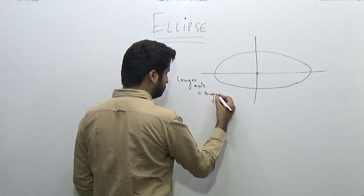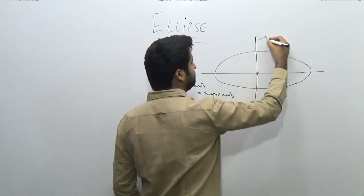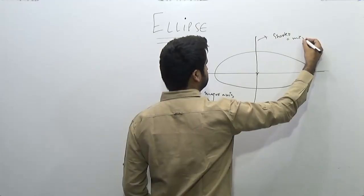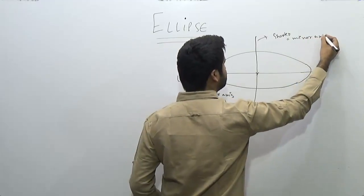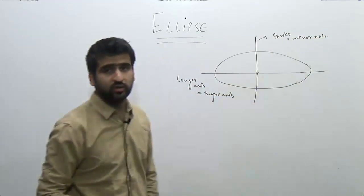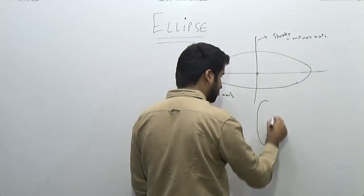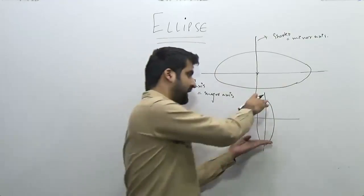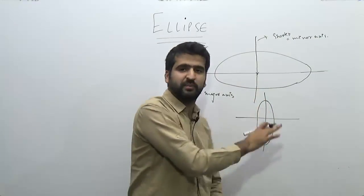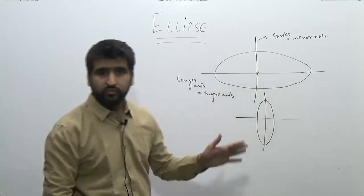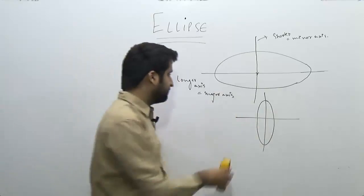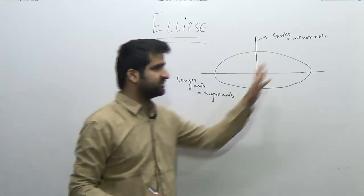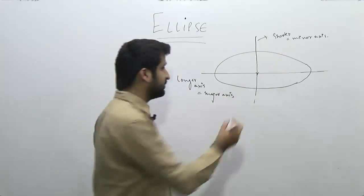The shorter axis is called the minor axis. I am not saying the horizontal axis is the major axis, because the ellipse can be oriented vertically as well. In that case, the vertical axis will become the major axis while the horizontal one will be the minor axis. So the basic concept is that an ellipse has two axes — a major axis and a minor axis — and their point of intersection is called the center of the ellipse.